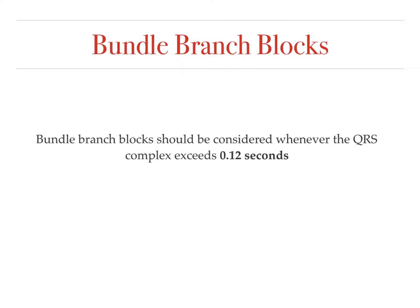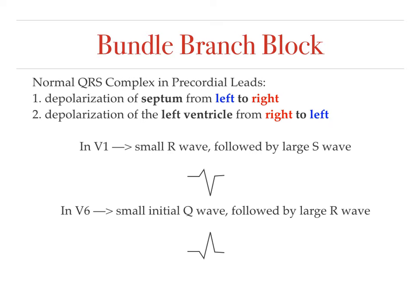You should consider bundle branch block whenever you see a QRS complex greater than 0.12 seconds. For the normal QRS complex, look at your precordial leads V1 through V6. Typically, depolarization of the septum occurs from left to right. In V1, the right precordial lead, you see a small R wave initially followed by a large S wave representing left ventricular depolarization, which progresses right to left. In V6, the left precordial lead, you see the opposite: an initial Q wave depression followed by a large R wave.